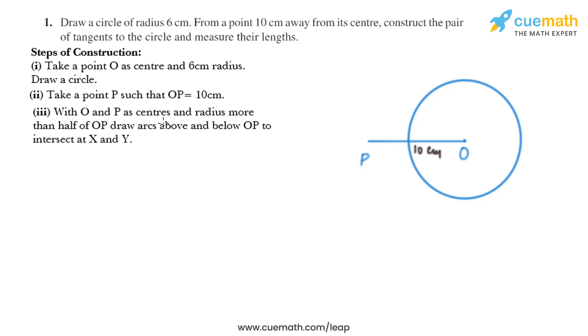Now in the next step, with O and P as centers and radius more than half of OP, draw arcs above and below OP to intersect at X and Y. Now I'll put the compass at P and we'll take the radius more than half of OP and we'll draw an arc like this. Similarly we'll put the compass at O and we'll draw another arc that intersects the initial arc like this.